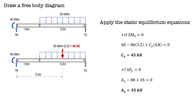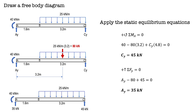After that, we apply static equilibrium equations — summation of moments at A equal to zero — and we get CY equals 45 kN. Then we replace the unknown forces at A and C with 35 kN and 45 kN.